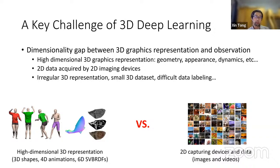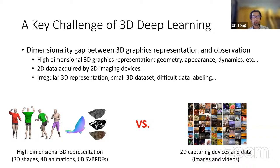This dimensional gap results in a set of blocking issues for 3D deep learning, such as diverse and irregular 3D representations, small 3D datasets available for network training, and difficult data labeling.